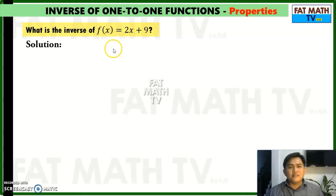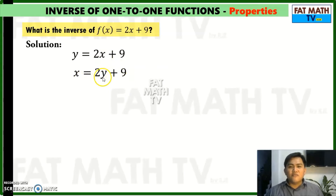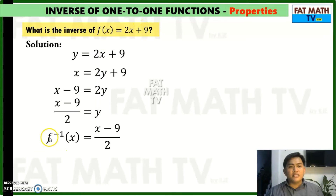What is its inverse? To solve for the inverse, write this in the form y equals f of x, and then interchange x and y — make this y into x and this x into y, and copy the others. Then lastly, solve for y. We will add negative 9 to both sides of the equation to obtain x minus 9 equals 2y, then divide both sides by 2 to get x minus 9 over 2 equals y. So the inverse of f, written as f inverse of x, is equal to x minus 9 over 2.